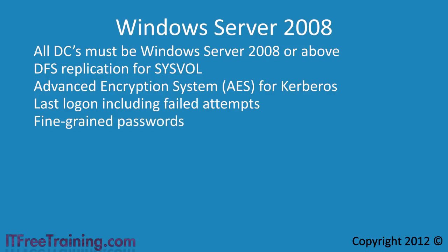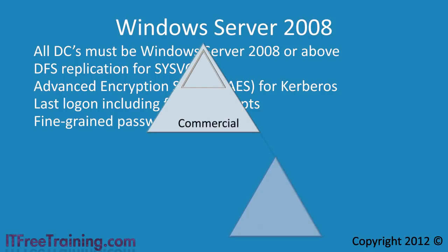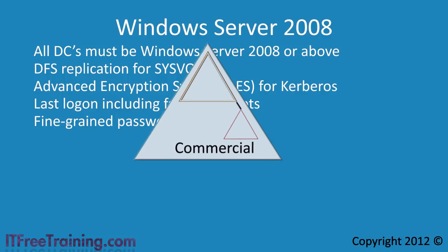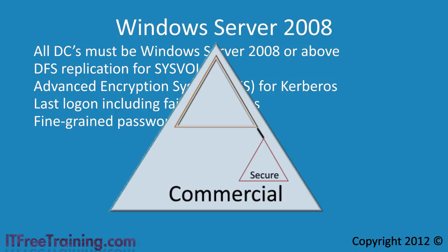The next feature is fine-grained passwords. This allows you to configure different password lengths and complexity requirements for different users. Previously, if you had a commercial network and a secure network, the only way a pre-Windows Server 2008 domain functional level could have different password requirements was to create separate domains. With Windows Server 2008 domain functional level, you can combine the two domains into one, where the secure domain becomes simply another organizational unit or OU. You can then assign one set of password requirements to the commercial OU and a different set to the secure OU.